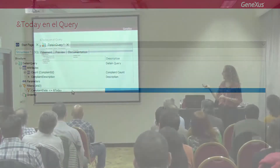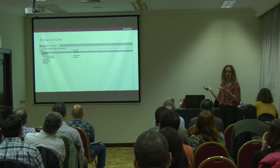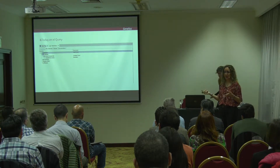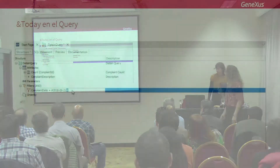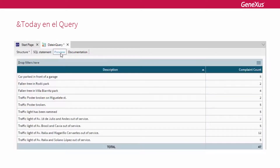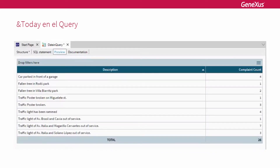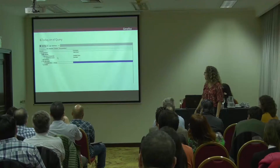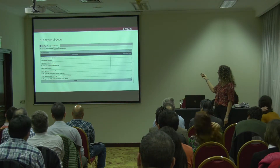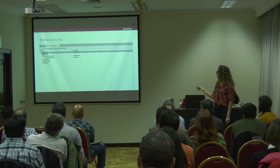What the query does is, on the basis of complaints from a date before today — there it is, that's the date — the date has to be equal to or less than today. When you go to the preview, if you look at the number, it's changed because it's looking into all the complaints up to today. It used to be 47 and now it goes down to 26.